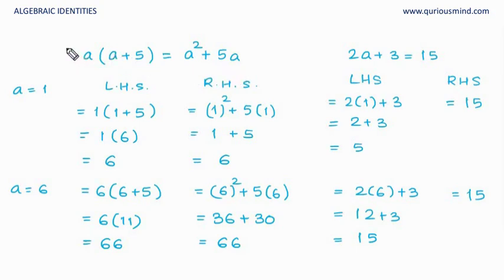And that's the main difference between identity and equation. Identity is valid for any value of variable. Whereas, equation is valid only for certain number of definite number of values of variable. In this video we are going to look at three standard identities.